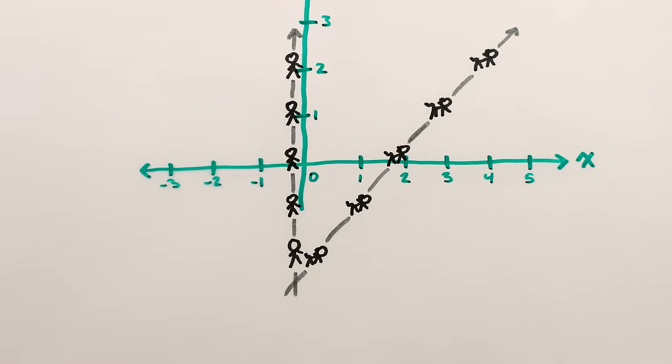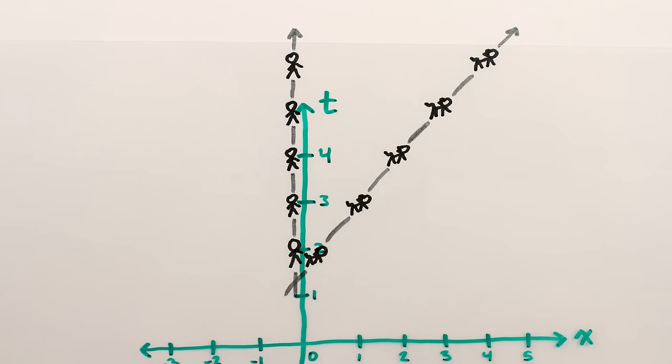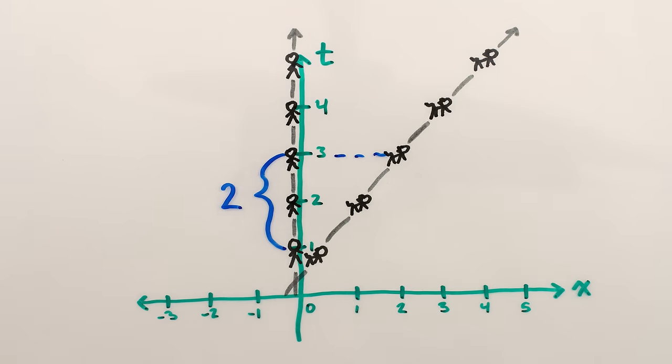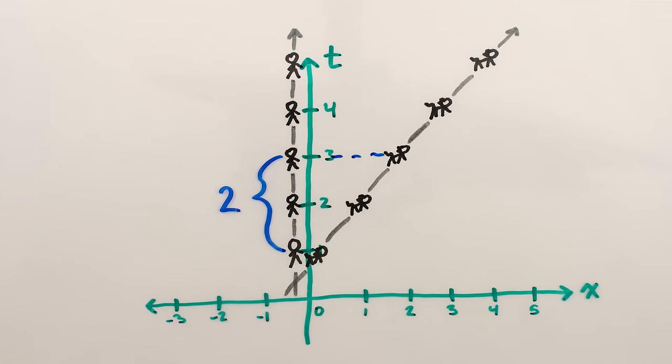Similarly, if you slide the time axis up and down, absolute times, like when the cat starts moving away from me, change. But time intervals don't change. The cat still takes two seconds to get two meters away from me. So you can slide the t-axis up and down, and distances in time are left unchanged.